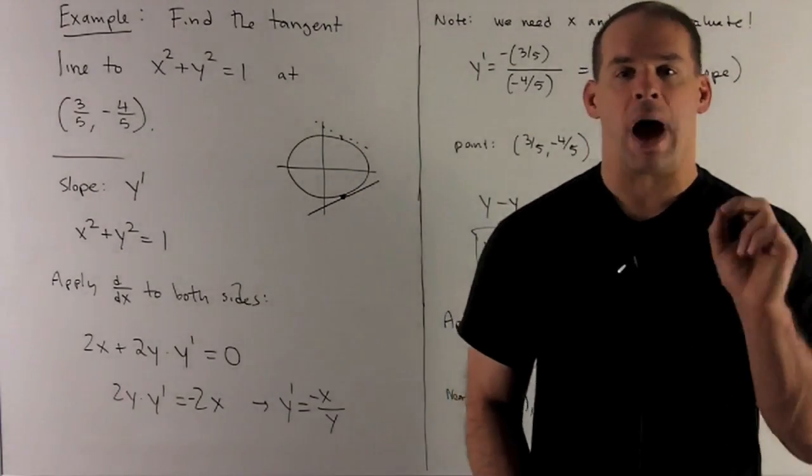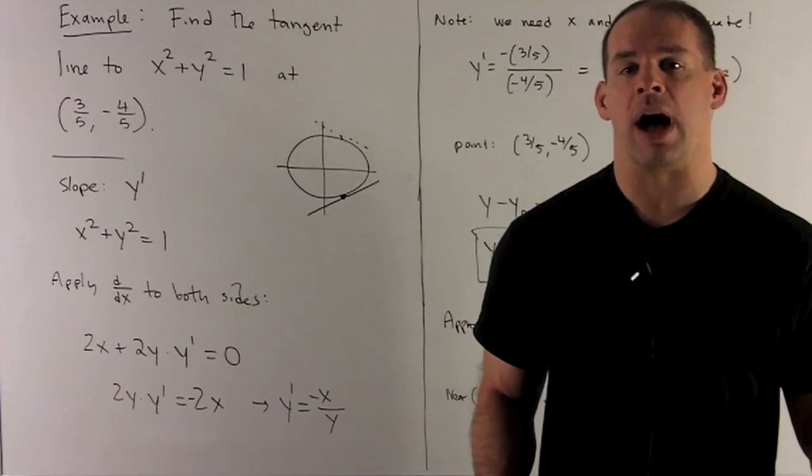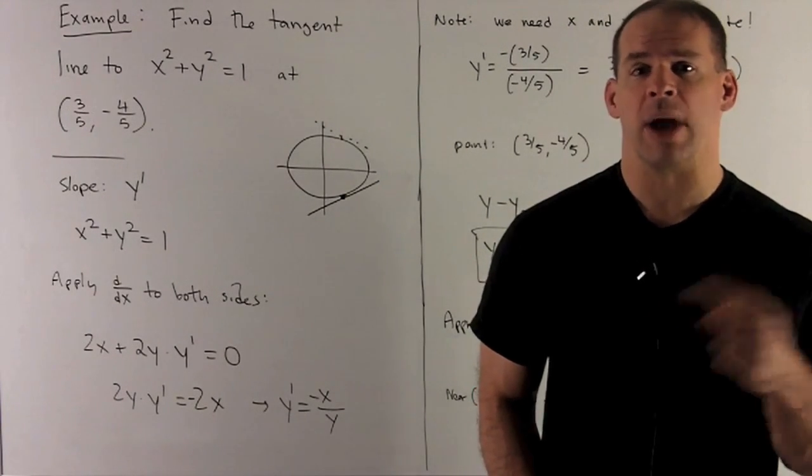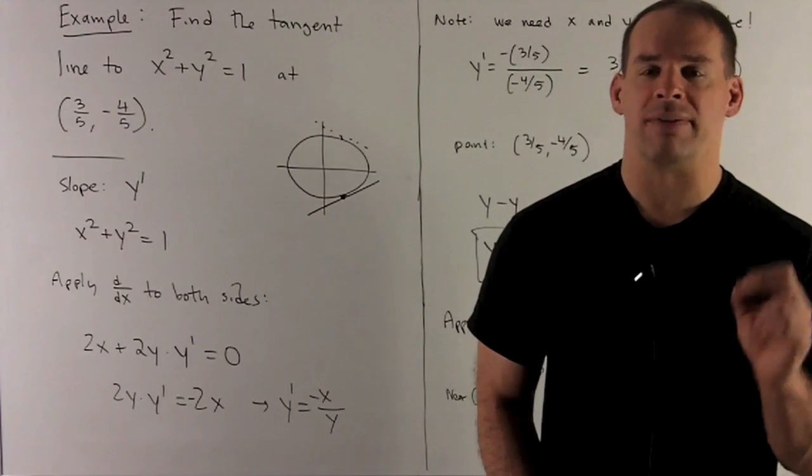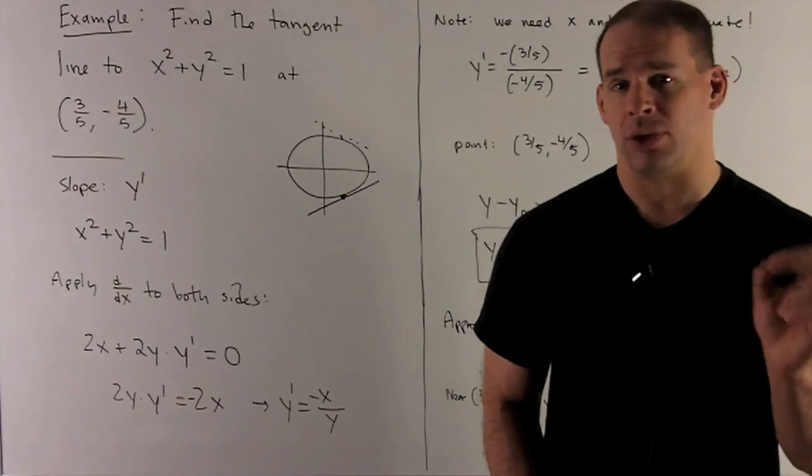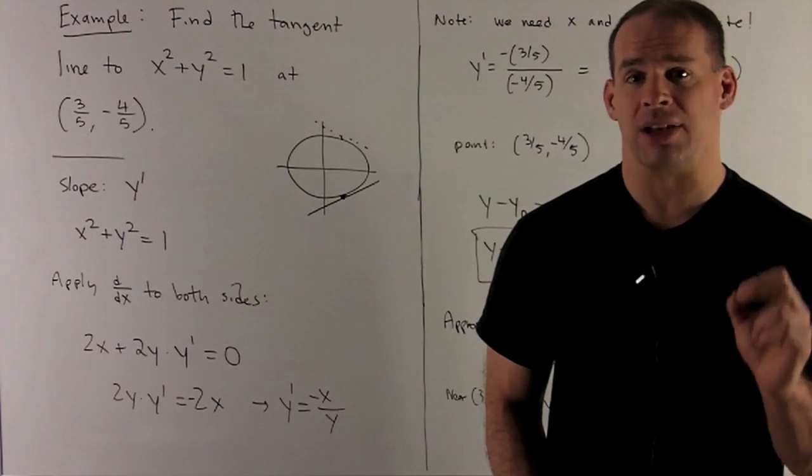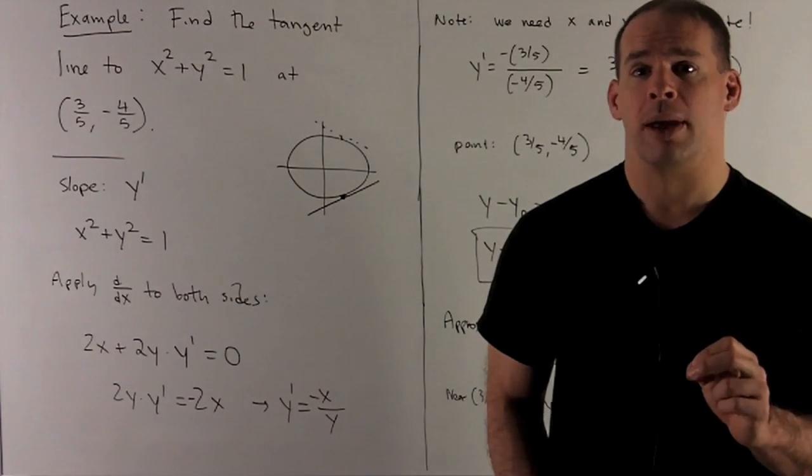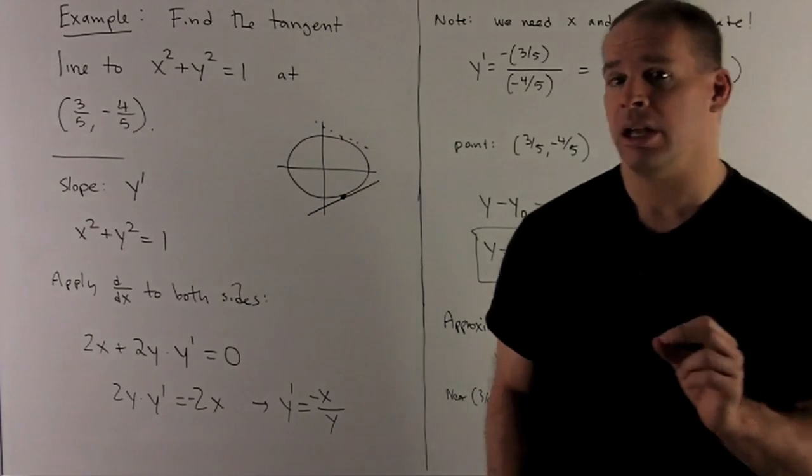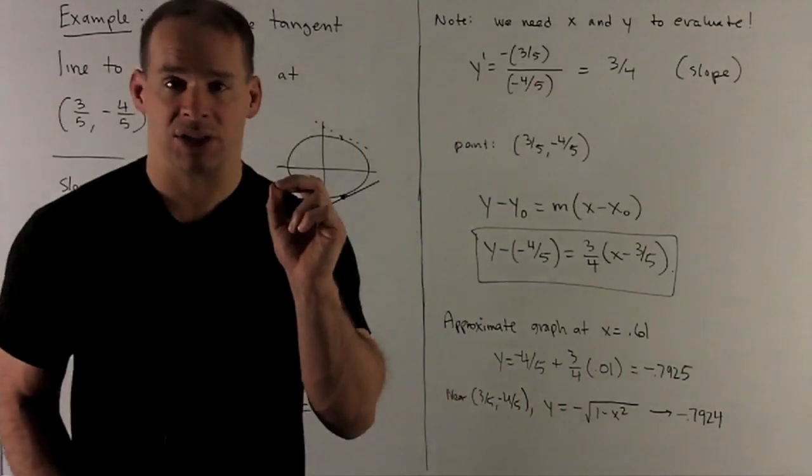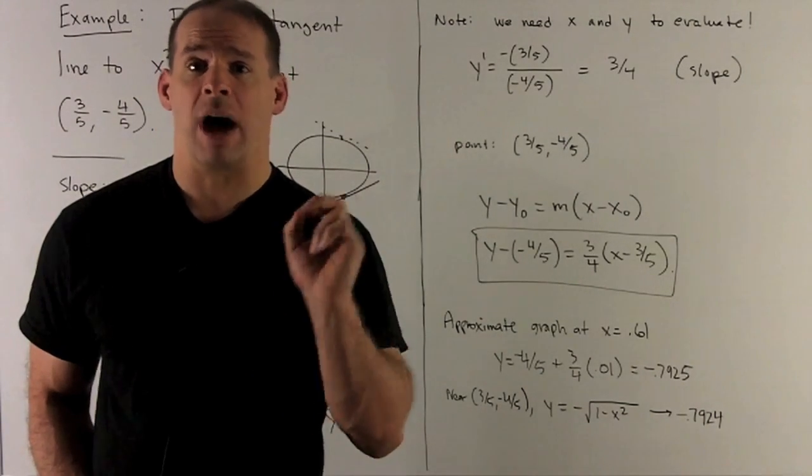I want to put the y' and non-y' stuff on other sides of the equality, so I'll push the 2x to the other side as -2x. Now what do I do? I factor out the y' - nothing to really factor here - so all I'll do is divide by 2y and then I get my answer: y' = -x/y. Note our answer here is going to depend on both x and y, so that's why we're going to have to be given the x and y for our point.